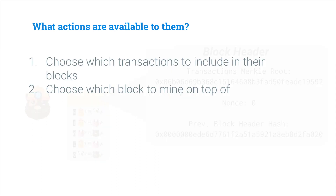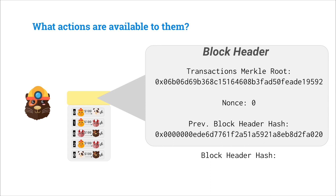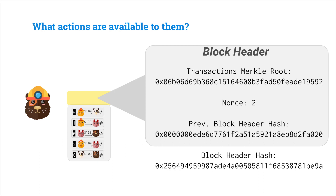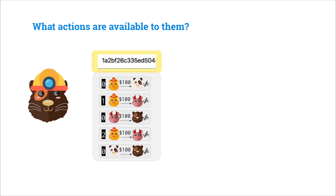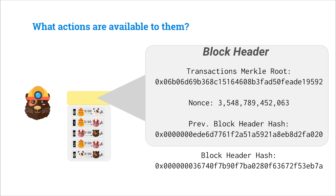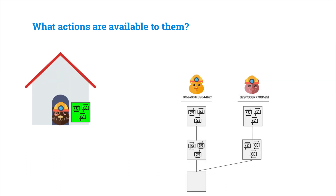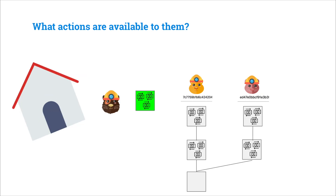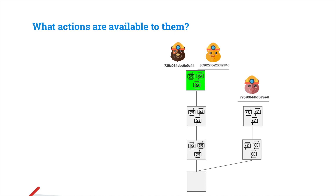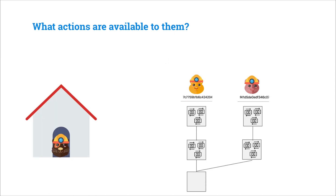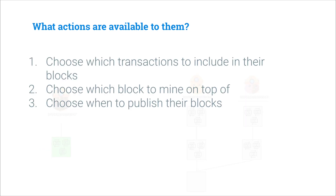Bob gets to choose which block he mines on top of. Once he's decided, he'll start computing proof of work, iterating the nonce, and computing the block header hash over and over again until he finds a nonce that gives him a block header hash with enough leading zero bits. If Bob follows the Bitcoin protocol honestly, he should just propagate his block to the network. But Bob could also withhold this block, not show it to his peers, and start mining on it in private — so once he's found a valid block, Bob can choose when to publish it to the network.